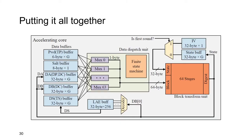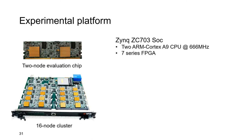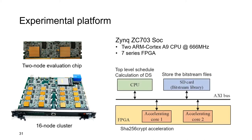Here we show the complete design of the core in our accelerator, which combines all the techniques we proposed. Our experimental platform is based on the Xilinx ZC703 SoC. On each node of the system, there is an ARM Cortex-A9 CPU, a 7-series FPGA, and an SD card. The CPU is responsible for top-level scheduling and the calculation of digest S. Based on available hardware resources, we placed two SHA-256-crypt accelerating cores on the FPGA, each working at 220 MHz. The SD card is used to store the bitstream files.